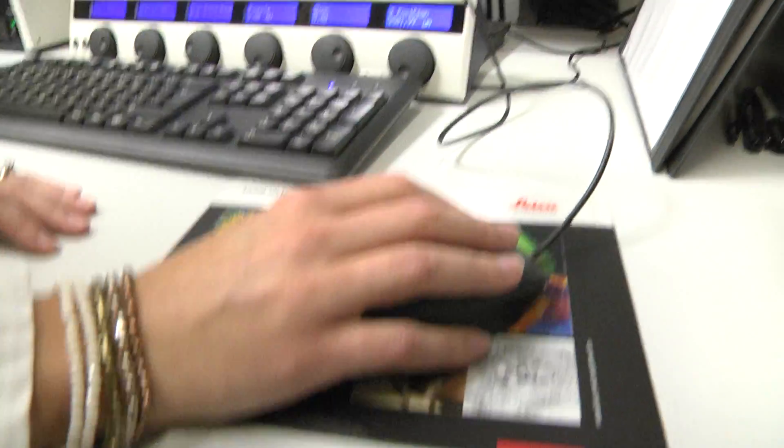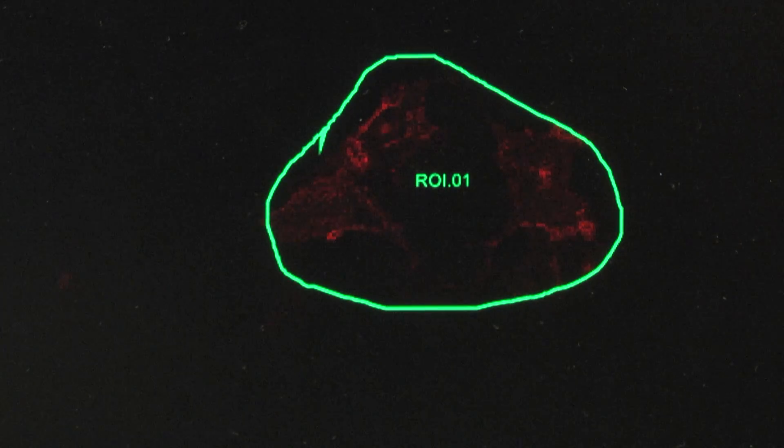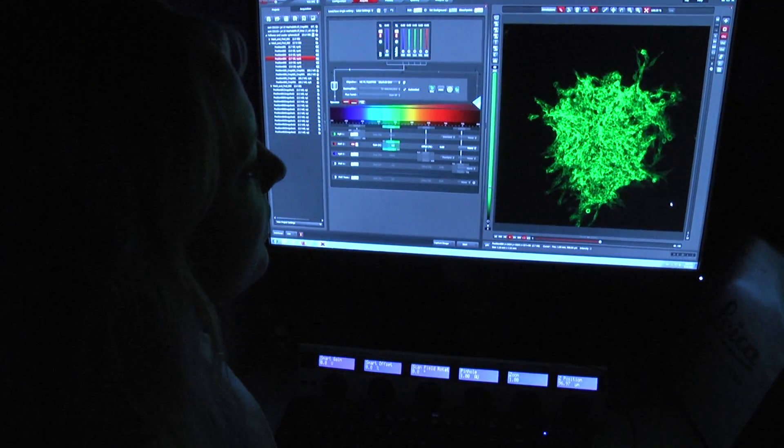It could be a fast-moving cell, like a leader cell. It could be a fast-growing cell. It could be a cell that doesn't respond or is resistant to a treatment.